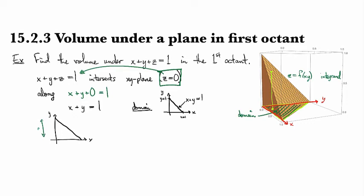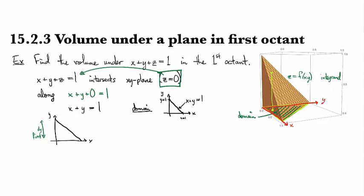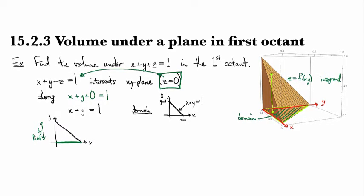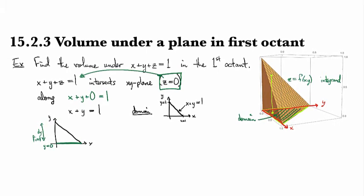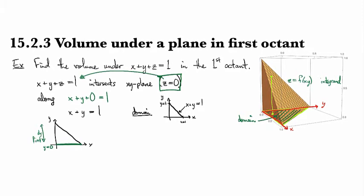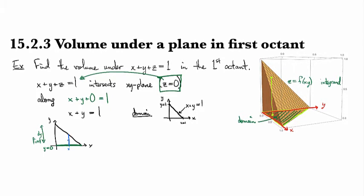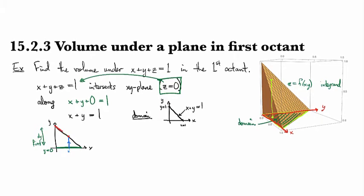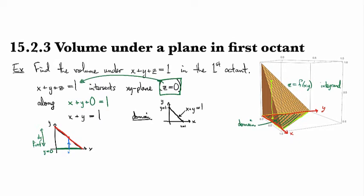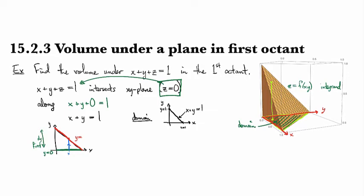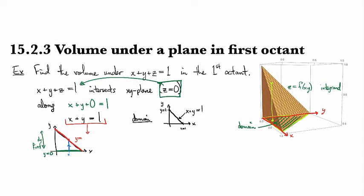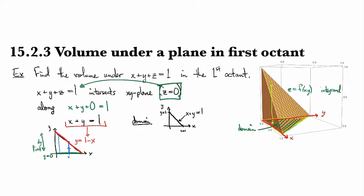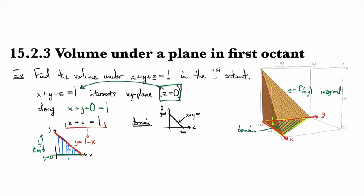If we're going to do dy first, we're looking for an upper bounding curve and a lower bounding curve. Starting at some given x, we start where y equals zero, then go up until we hit this line. Our stopping curve is the line x plus y equals one, which we solve for y to get y equals 1 minus x. So we're integrating from y equals 0 to y equals 1 minus x, picking up all those slices.